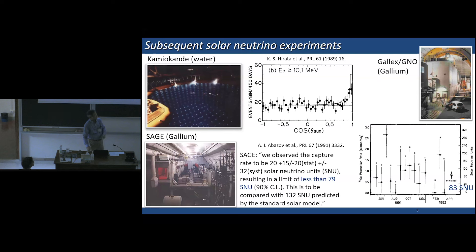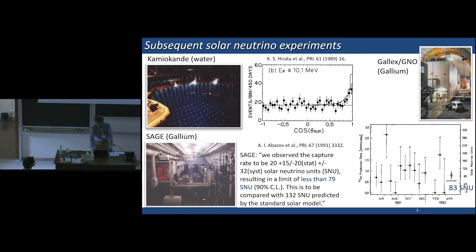Soon, GALLEX reported their result. On average, the observed solar neutrino rate was 83 SNU. In the end, the initial SAGE result was a statistical fluctuation and the final number was closer to the GALLEX result. Anyway, all of these experiments observed a deficit of solar neutrinos, but the situation was still inconclusive.